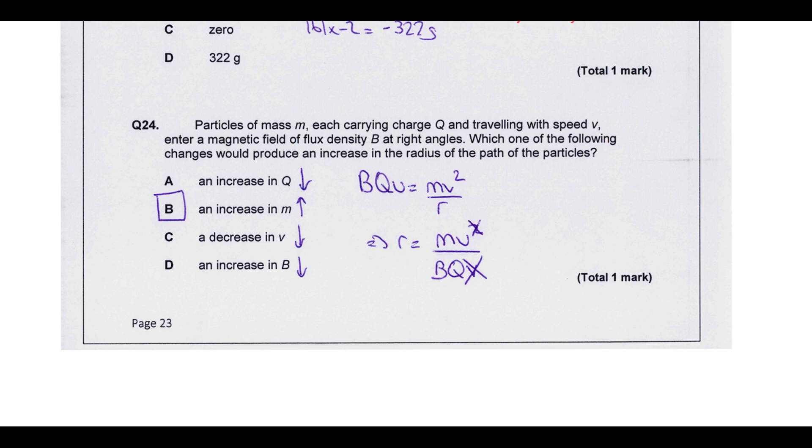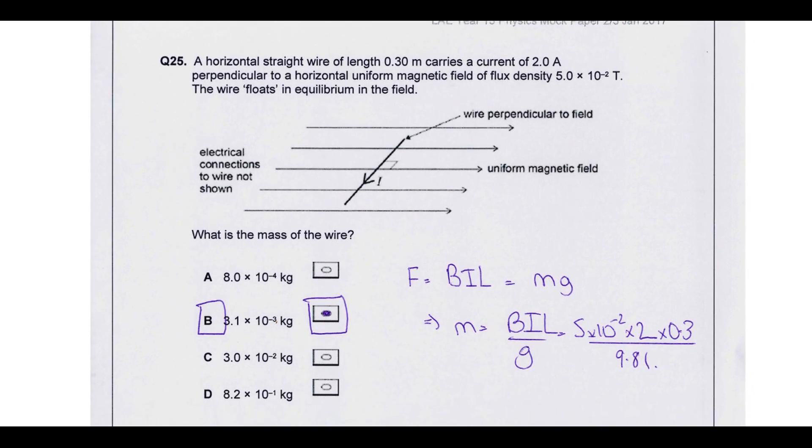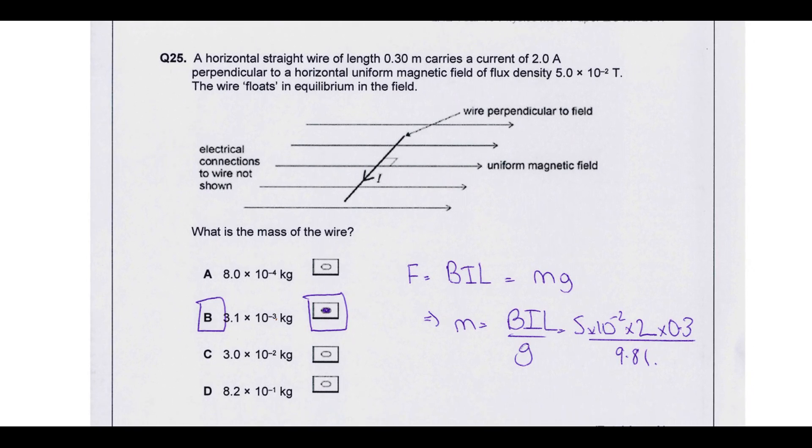Particles of mass M each carrying charge Q and traveling with speed V into a magnetic field of flux density B at a right angle, which of one of the following changes would produce an increase in the radius of the path of the particles. So what we're dealing with here is equating the force from a magnetic field and the force to be moving circular motion. The clue to do that here was the fact it was talking about radius, which is indicating it's going to be some sort of circular motion. Rearrange to make R the subject so we can see what happens. You can see if you increase Q, you're going to decrease R. If you increase M, you're going to increase R. If you decrease V, you decrease R. And if you increase B, you decrease R. So you can see the answer is going to be B here.